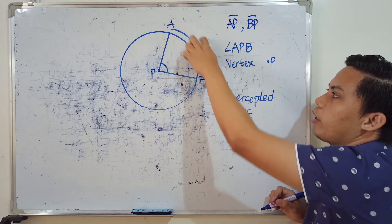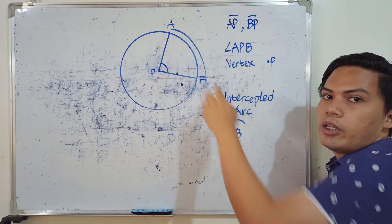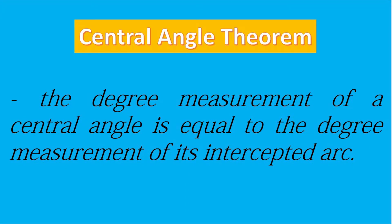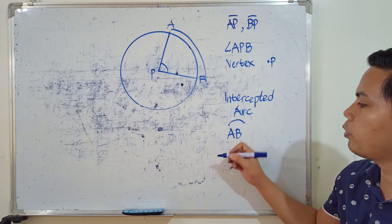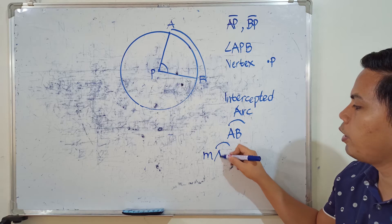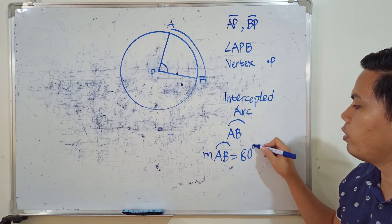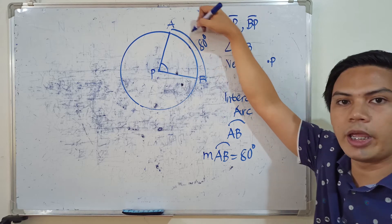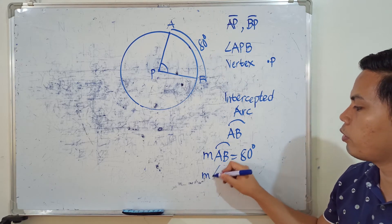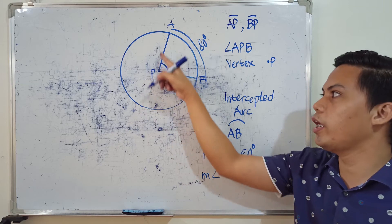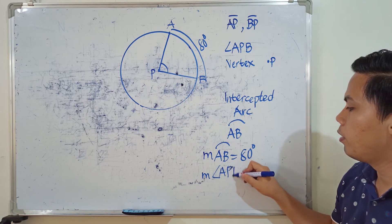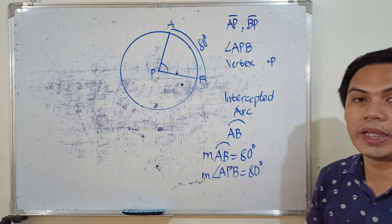The intercepted arc can also be called arc BA. Now we have what we call the Central Angle Theorem, which states that the degree measurement of a central angle is equal to the degree measurement of its intercepted arc. Therefore, if the measurement of arc AB is 80 degrees, it follows that the measurement of the central angle APB is also equal to 80 degrees.